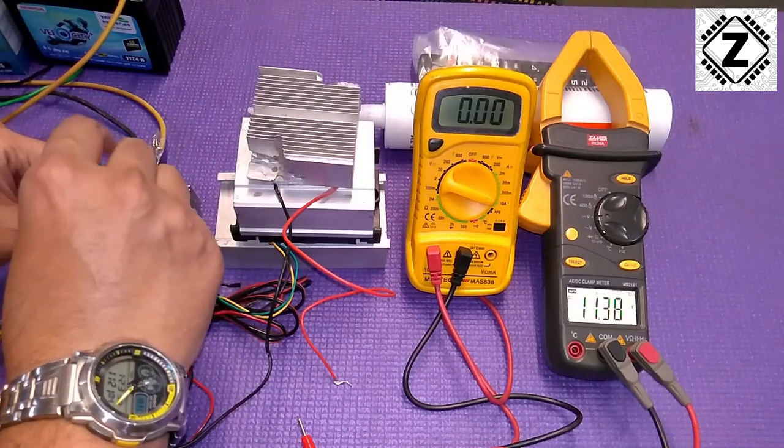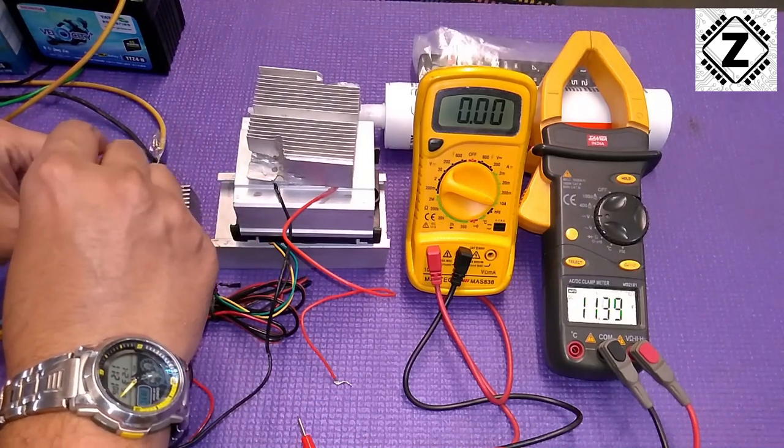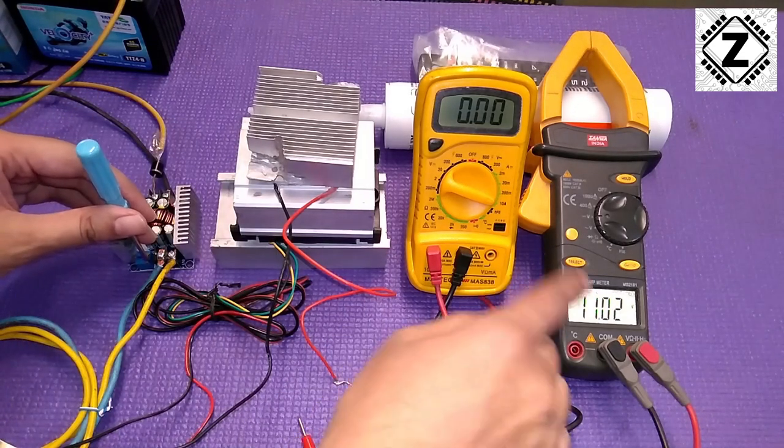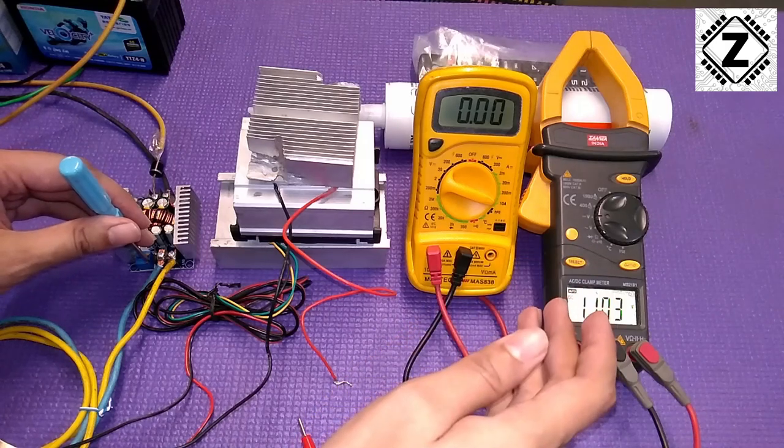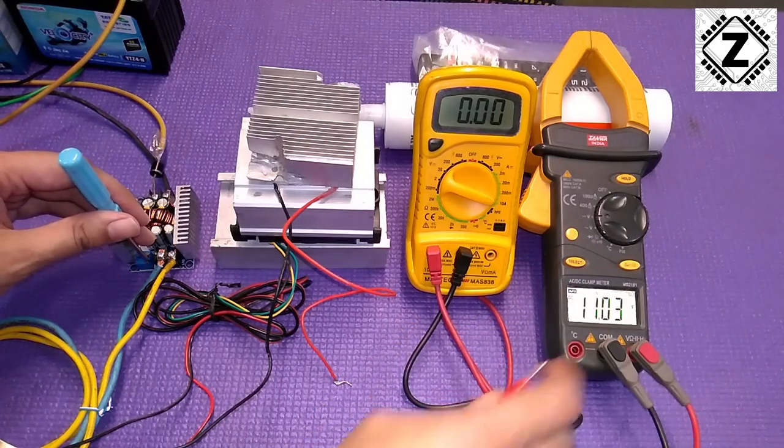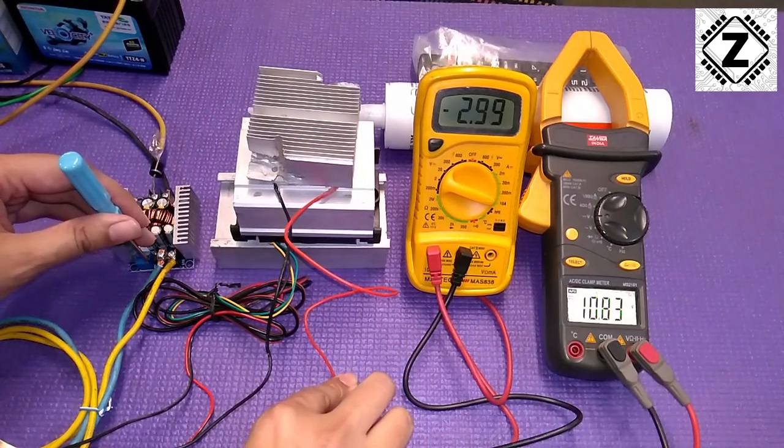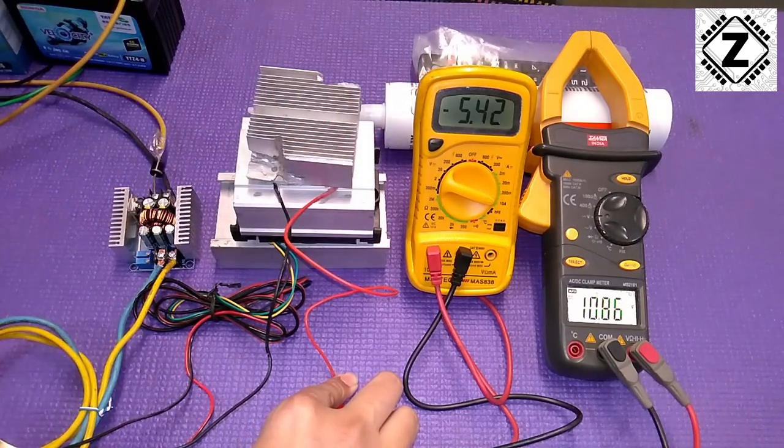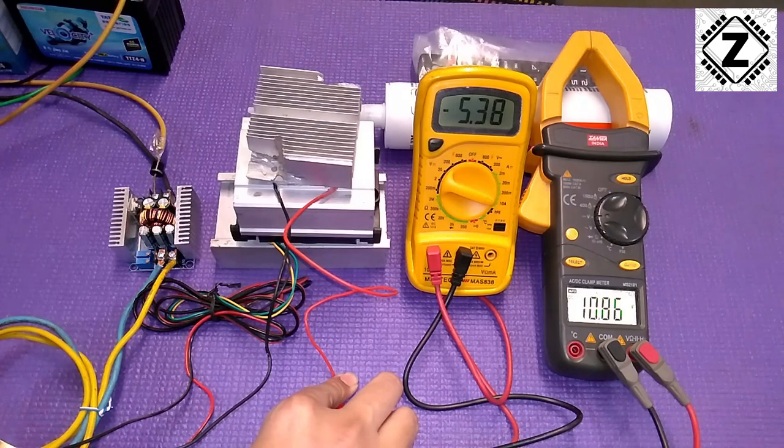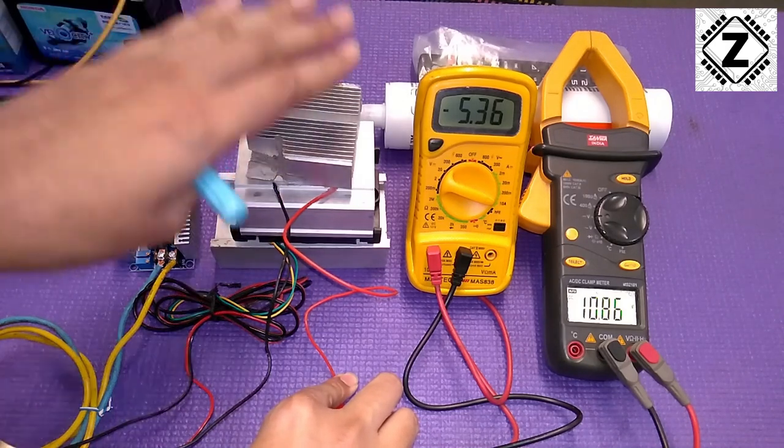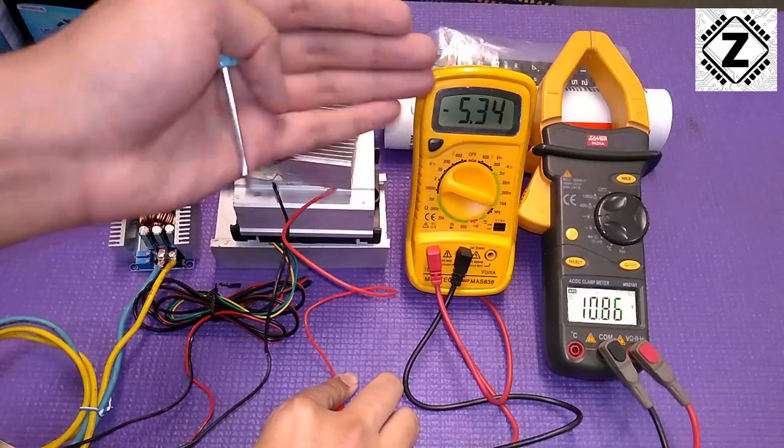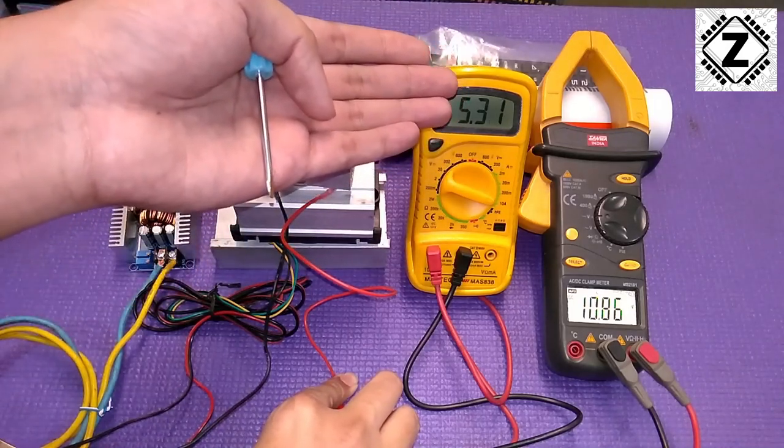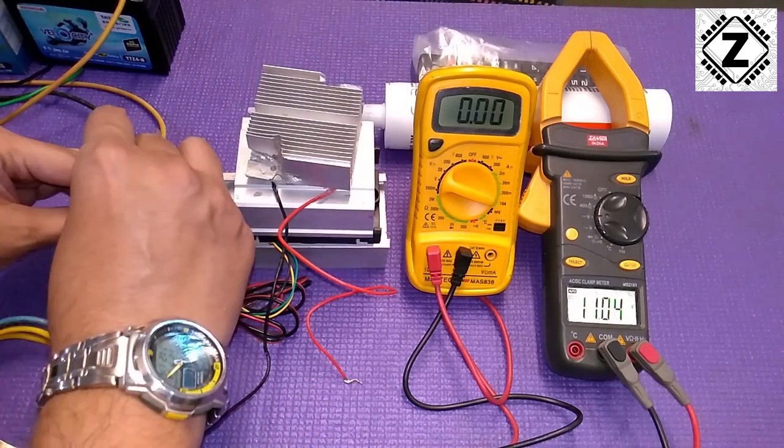Let's go to 11 volts. I'm making the readings closer in this range because this is where the sweet spot would be for projects. At 11 volts it started at 5.8 amps and came down to 5.4. It's very cold now. If this heatsink was larger, it would stand at 5.5 amps.